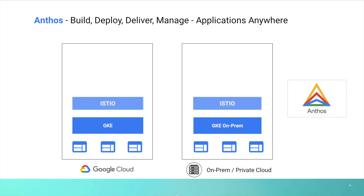What about the services or APIs exposed from these applications? How do you connect, control, secure, and observe these microservices? Istio is an open-source service mesh and microservices management platform. Google Cloud Anthos provides managed Istio as part of the Anthos stack to help manage the microservices.